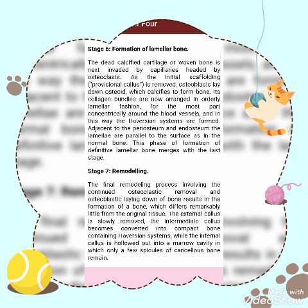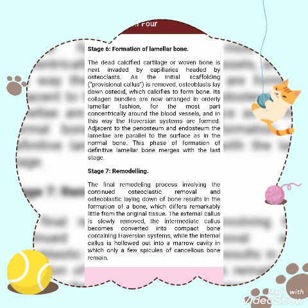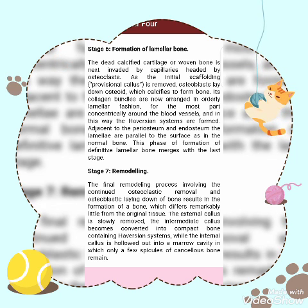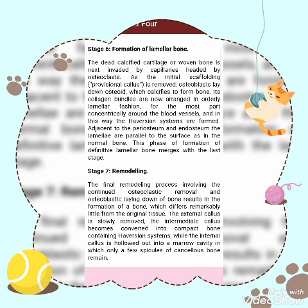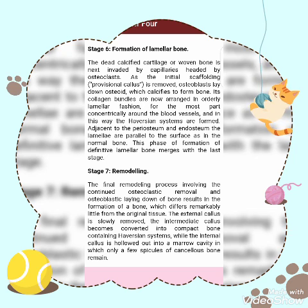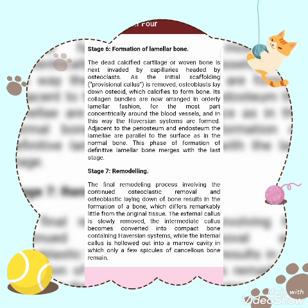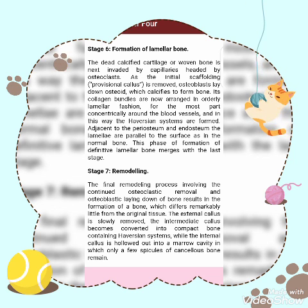Stage six is formation of lamellar bone: the deep calcified cartilage or woven bone is invaded by capillaries headed by osteoclasts. As the initial scaffolding provisional callus is removed, osteoblasts lay down osteoid which calcifies to form bone. Its collagen bundles are now arranged in orderly lamellar fashion, concentrically around blood vessels, forming the Haversian system. Adjacent to the periosteum and endosteum the lamellae are peripheral to the surface, as in normal bone. Stage seven is remodeling: the final remodeling process involving continued osteoclastic removal and osteoblastic laying down of bone results in formation of bone which differs remarkably little from the original tissue.